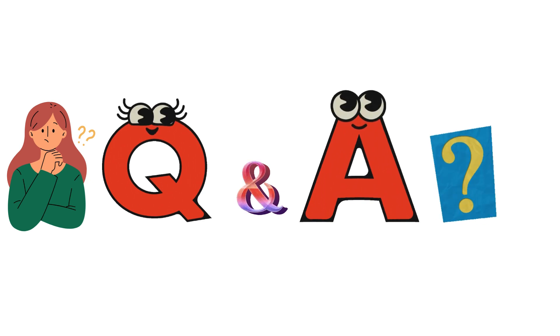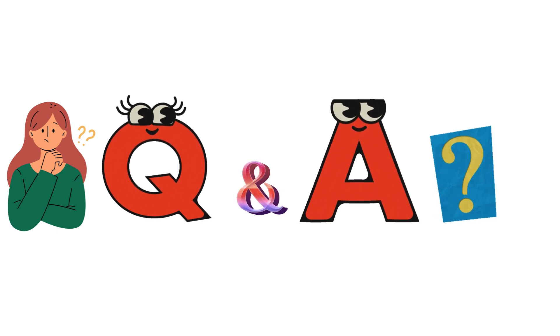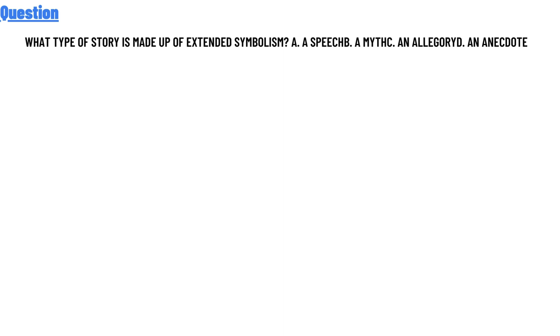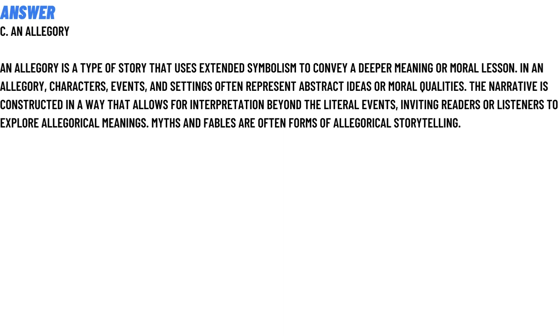Our today's question is: what type of story is made up of extended symbolism? Option A: speech. Option B: mythic. Option C: allegory. Option D: anti-god. The correct answer of the question is option C, allegory.